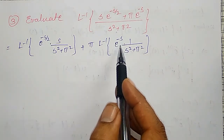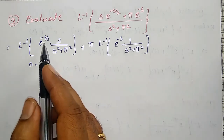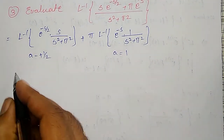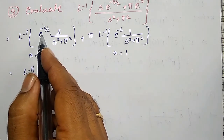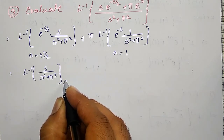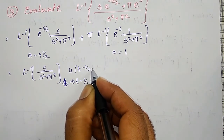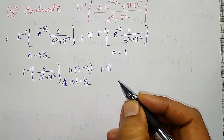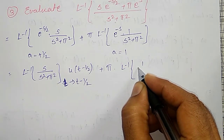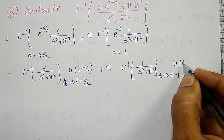Both terms are multiplied with e to the power minus as. In the first term, a is equal to 1 over 2. In the second term, a is equal to 1. Using the previous property, the inverse Laplace Transform of e to the power minus s over 2 applied to s divided by s squared plus pi squared gives: t replaced by t minus 1 over 2, into u(t minus 1 over 2). Plus pi into: the inverse Laplace Transform of 1 divided by s squared plus pi squared, with t replaced by t minus 1, into u(t minus 1).